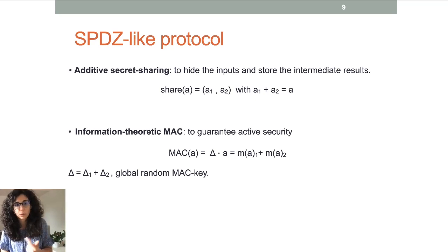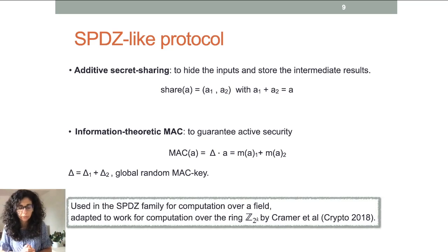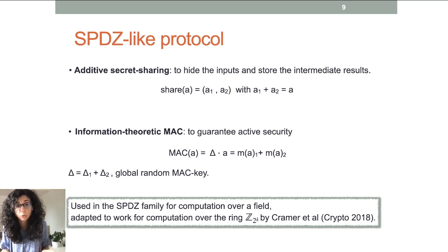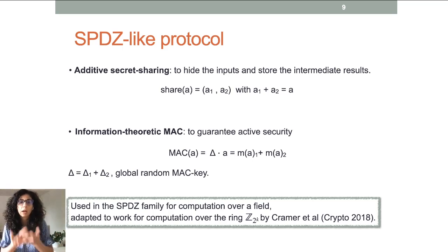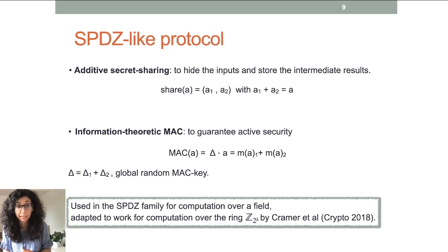These two tools are used for all online-phase protocols in the SPDZ family, typically on a field. Cramer and others recently extended and adapted these tools for computation over the ring Z2k. The key idea is: if you want to compute on Z2k, you go to an extension ring with s additional bits. Specifically, for a value a in Z2k, you take a' in Z_{2^{k+s}} such that the first k bits agree, meaning the two values are equal mod 2^k, and then you secret share and authenticate a'.